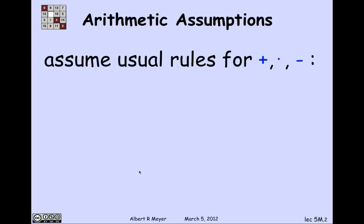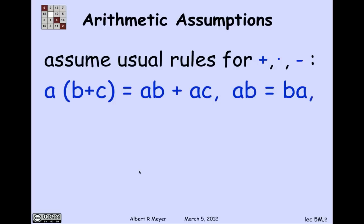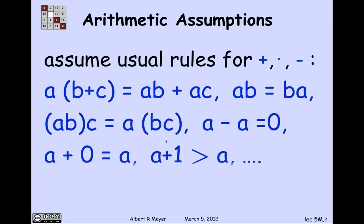We're going to assume all of the usual algebraic rules for addition and multiplication and subtraction. The first equality is called distributivity of multiplication over plus. The second rule is called commutativity of multiplication. This is called associativity of multiplication. This is called the additive identity — A minus A is 0, or actually additive inverse. 0 is the additive identity and minus A is the inverse of A. A plus 0 equals A is the definition of 0 being an additive identity. A plus 1 is greater than A. These are all standard algebraic facts that we're going to take for granted.